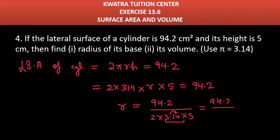So you get 94.2 divided by 31.4. If you multiply by 3, your answer is 94.2, so the radius in this case is 3 cm. The first part is done — our radius is found.